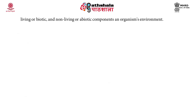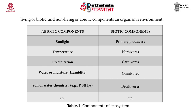An organism's environment is made up of living or biotic and non-living or abiotic components. Table 1 summarizes the components of an ecosystem. The abiotic components are sunlight, temperature, precipitation, water or moisture or humidity, and soil or water chemistry — for example, phosphorus or ammonium. Biotic components include primary producers, herbivores, carnivores, omnivores, detritivores, etc.